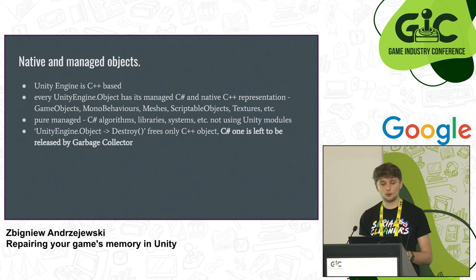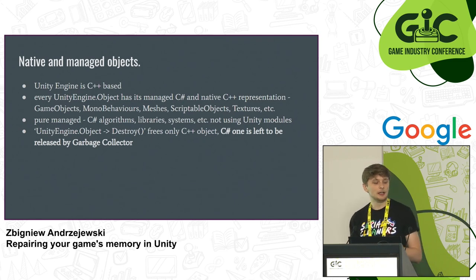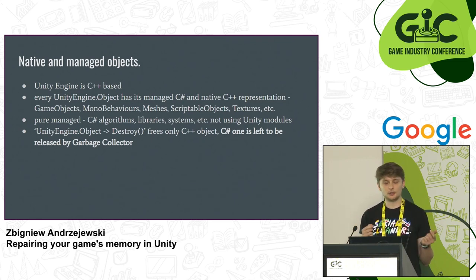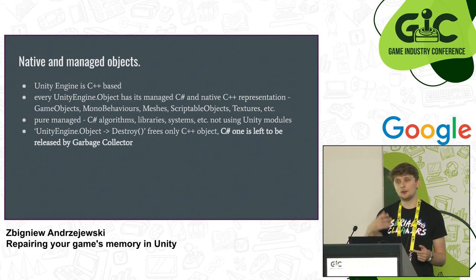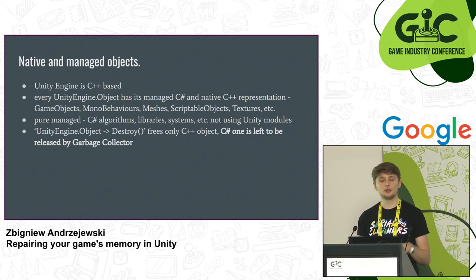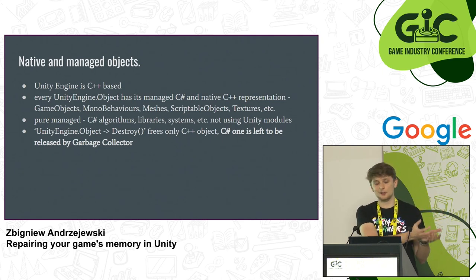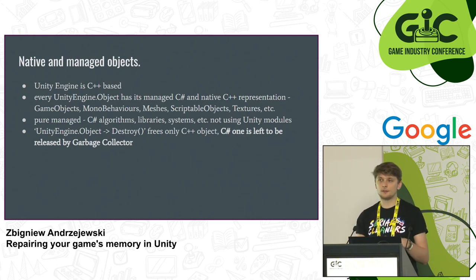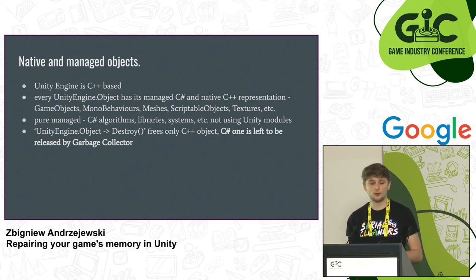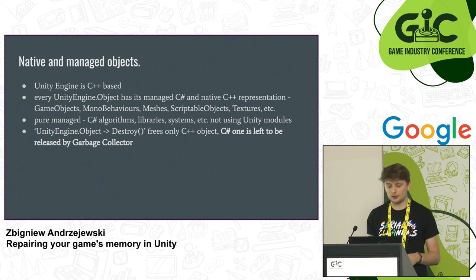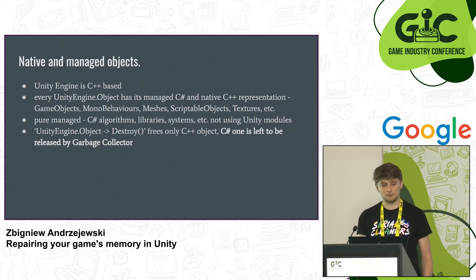Something important about thinking about both managed and native objects: Unity Engine's Destroy method frees only the C++ object. When you use it, only the C++ version of the object is deleted and the memory resource is freed. But the C-Sharp managed object is left to be released by the garbage collector — it's not destroyed at the same moment as you call the C-Sharp Destroy method.